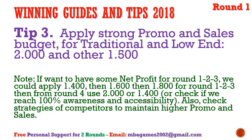This saving is not necessary in later rounds, because when you get dozens of millions in net profit, spending a few million on promotion won't reduce it significantly. If you want net profit from rounds one to three, apply around $1,400–$1,500, then increase to $1,600–$1,800 in the next two rounds. Do not spend $2,000 for all five products; when a product reaches 100% awareness and accessibility in round four or five, you can reduce back to $1,400.